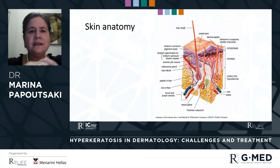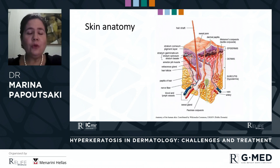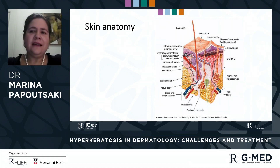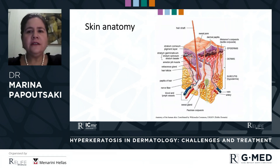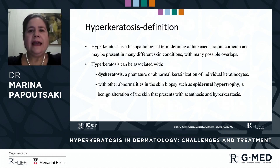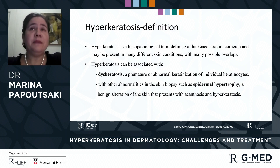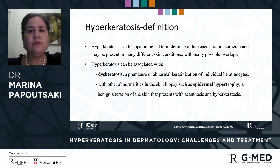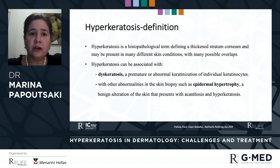We will have the chance to talk about hyperkeratosis. We know that skin is the most extensive organ of the body, and its structure and thickness may vary according to the anatomic site. The effects that hyperkeratosis has may also vary. Hyperkeratosis is a histopathological term defining a thickened stratum corneum and may be present in many different skin conditions with many possible overlaps.